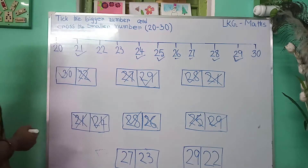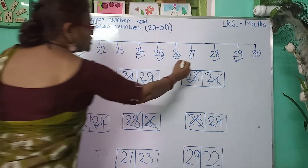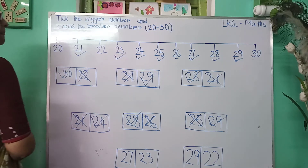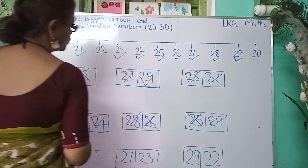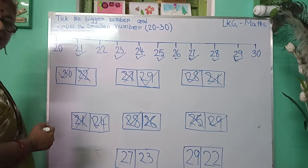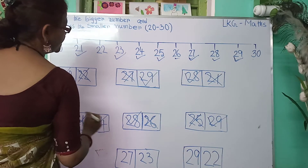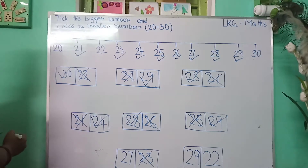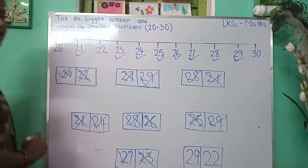Here are 27 and 23. Where is 27? Here is 27. And where is 23? Here is 23. I have written 23 first, then 27. So, 23 is the first number, so it is smaller than 27. I will put a cross on 23. And 27 is the bigger number, so I will put a tick.